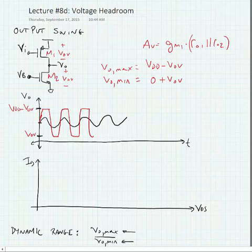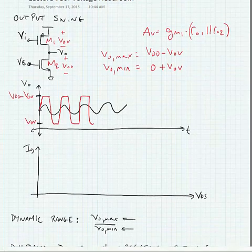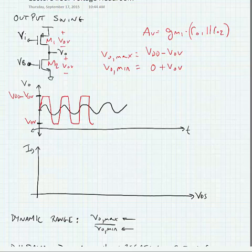So what's happening with the amplifier also as we go into saturation is that we're driving the amplifier out of the saturation region and into the linear region where the resistance decreases. Remember, we want to use the transistor in the region where the output current doesn't change much with respect to VDS.